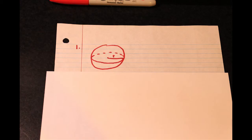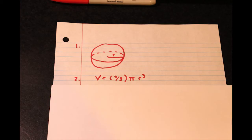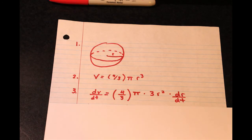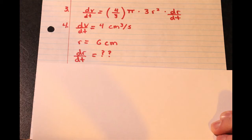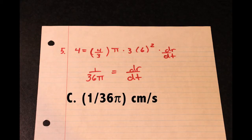First you're going to draw a sphere that represents the volume of a balloon and label the radius r. Next, you're going to find the equation — we know that volume equals 4/3 times π r cubed for spheres. Then you're going to take the derivative: dv/dt equals 4/3 times π times 3r squared times dr/dt. We know that the volume is increasing at 4 centimeters cubed per second and that the radius equals 6 centimeters, but we don't know the rate at which the radius is increasing. Finally, you plug in your values, simplify, and find that 1 over 36π is your answer. So C — 1 over 36π centimeters per second.